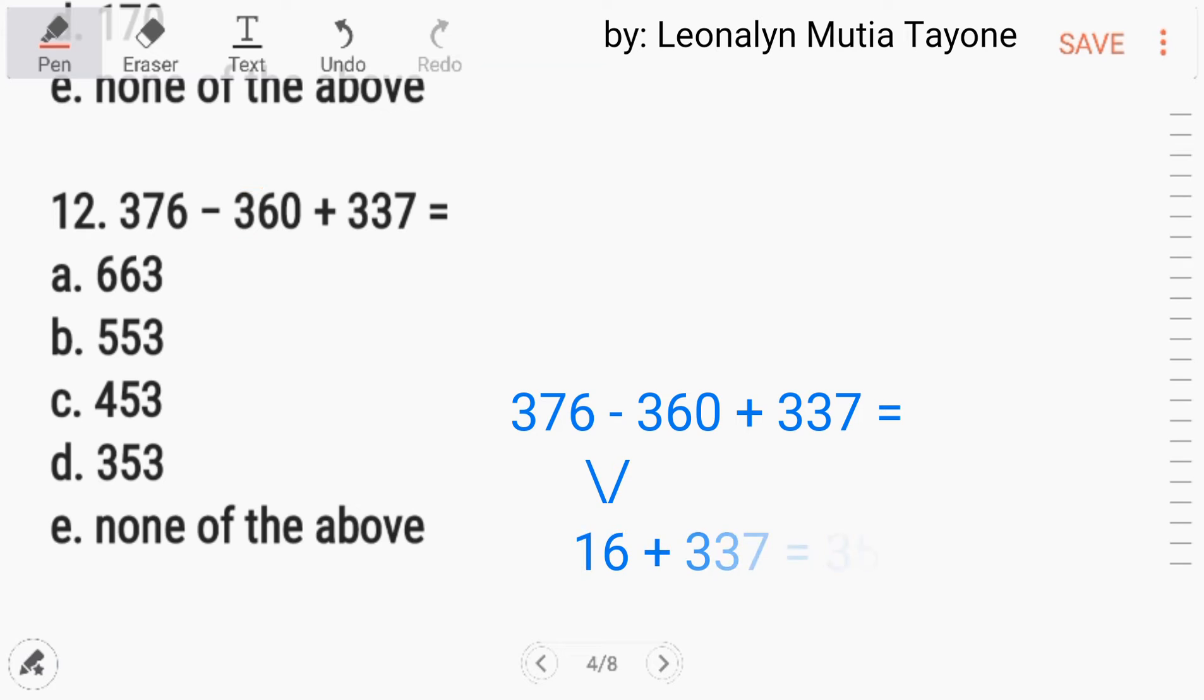Number 12, 376 minus 360 plus 337. Dalawang operation na nga nandito. So we will follow order of operation. Whichever comes first from left to right. Kasi yung subtraction at sa kasi addition, they rank equally. So kung alin ang mauna sa kanila. Nauna ang subtraction, so unahin natin siya. 376 minus 360. And this is 16. Pariho man silang 300. Wala na yan. So 76 minus 60. That is 16. 16 plus 337. And this is 353. So the answer is letter D.